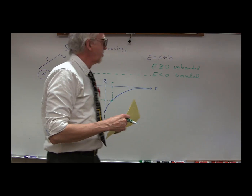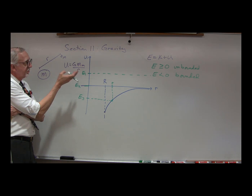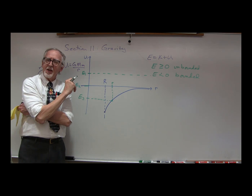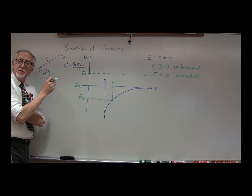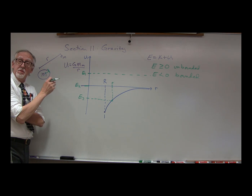One thing we have assumed so far is that we could always treat the mass as a point mass. Newton's law of gravity works from the center of one object to the center of the other, but what happens if we have radii less than the radius of the object — if we go down beneath the surface? What happens to the potential energy in that case? Let's take a quick look at that.